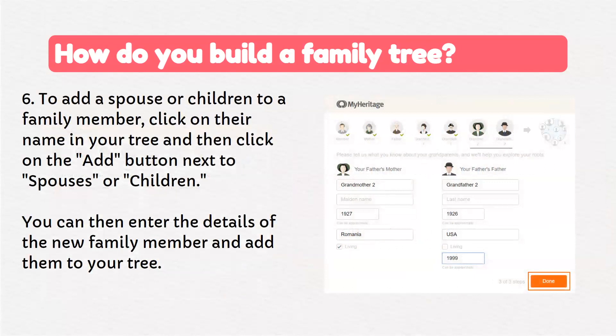To add a spouse or children to a family member, click on their name in your tree and then click on the 'Add' button next to Spouses or Children. You can then enter the details of the new family members and add them to your tree.